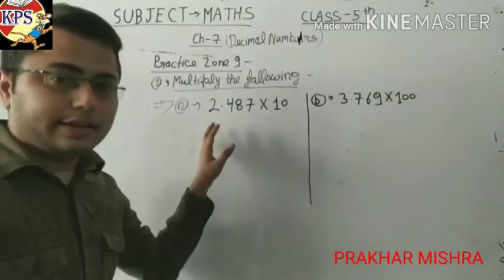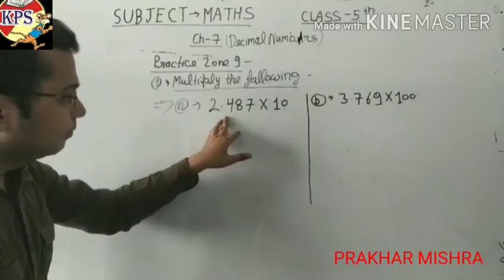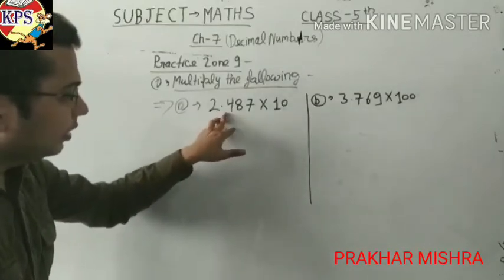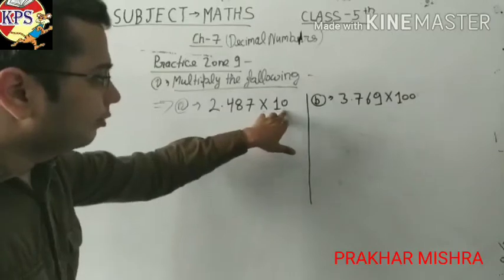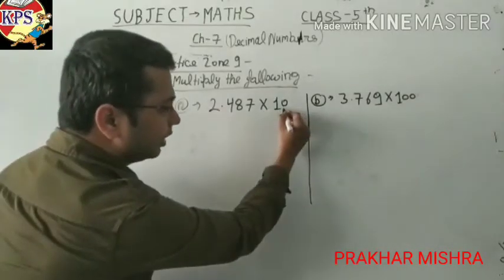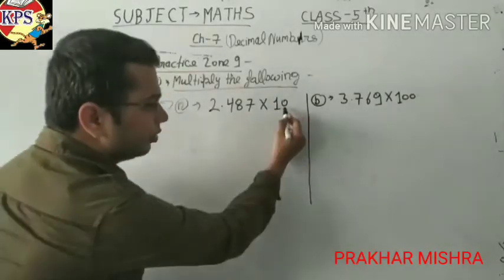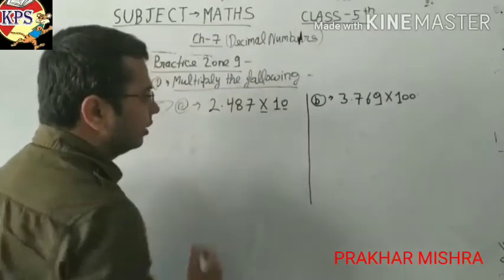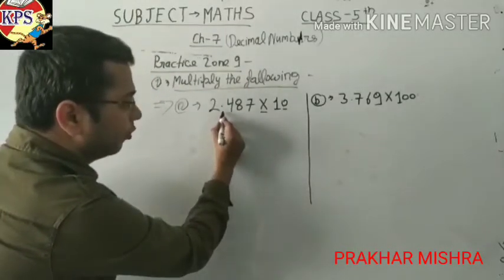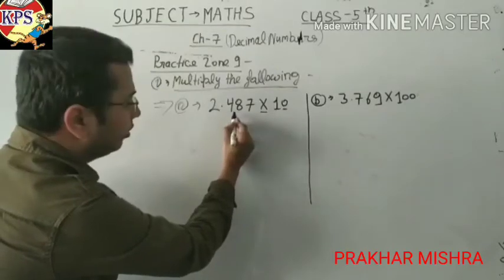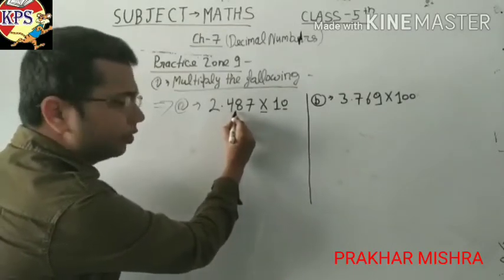How do we multiply these decimal numbers? In the first condition, you can see that the point is after one number — the point is after 2. And here one zero is given. One zero is given. If one zero is given and we are multiplying, then the point will shift — the point will be mentioned after one number.